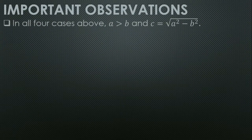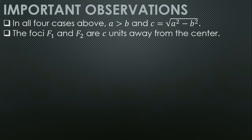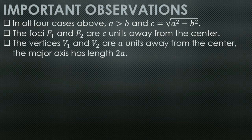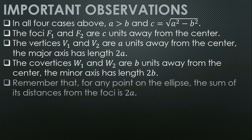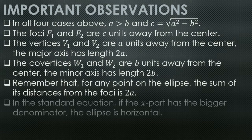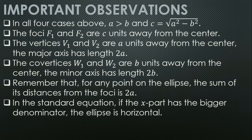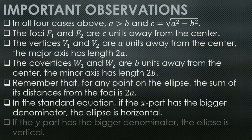Important observations: In all four cases, a is always greater than b, and c = √(a² − b²). The foci are c units from the center (always positive), the vertices are a units from the center, and the co-vertices are b units from the center. The major axis has length 2a and the minor axis has length 2b. If the x-part has the bigger denominator, the ellipse is horizontal; if the y-part has the bigger denominator, it is vertical.